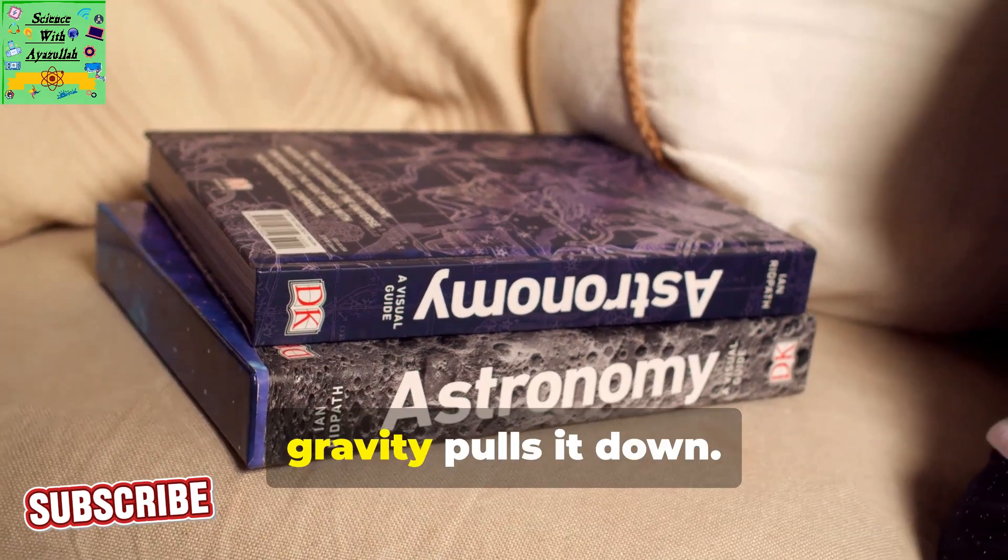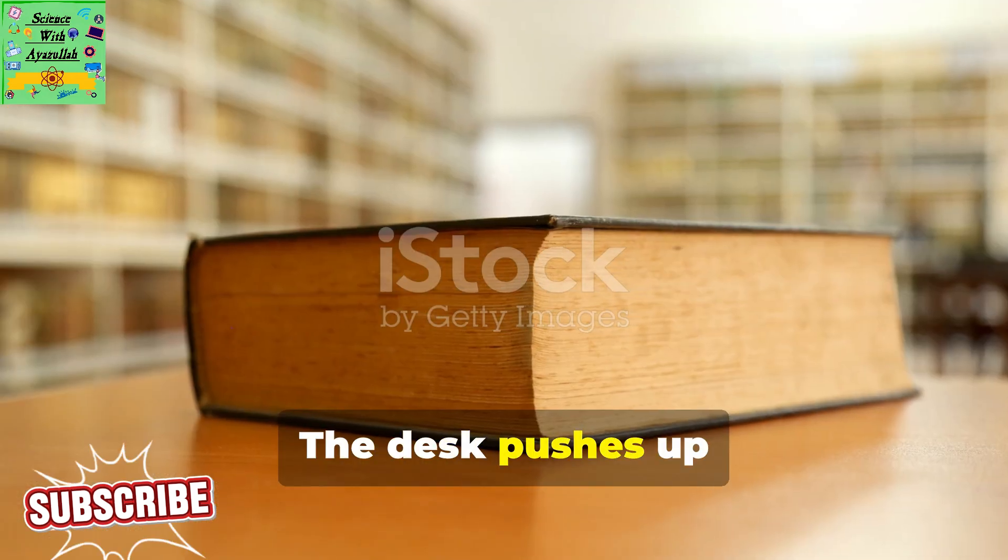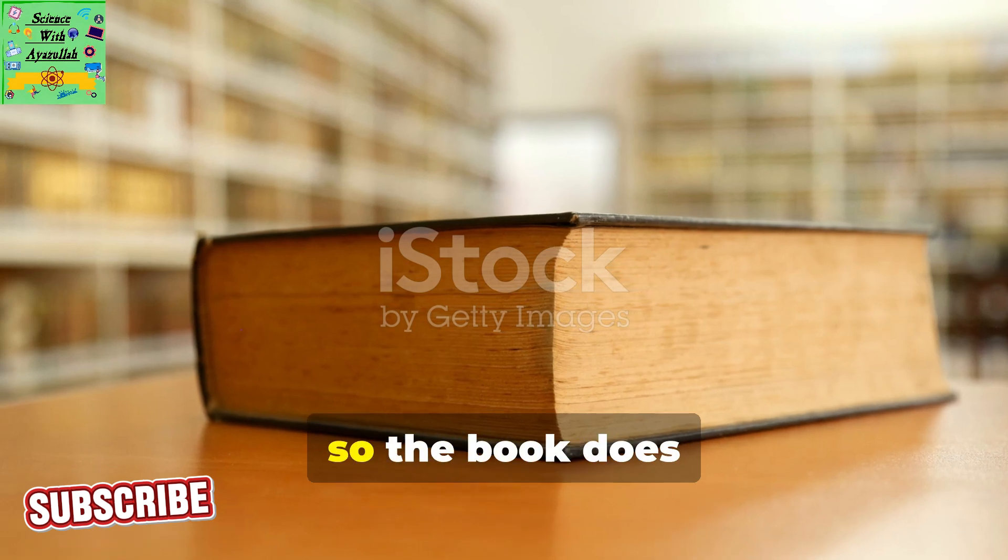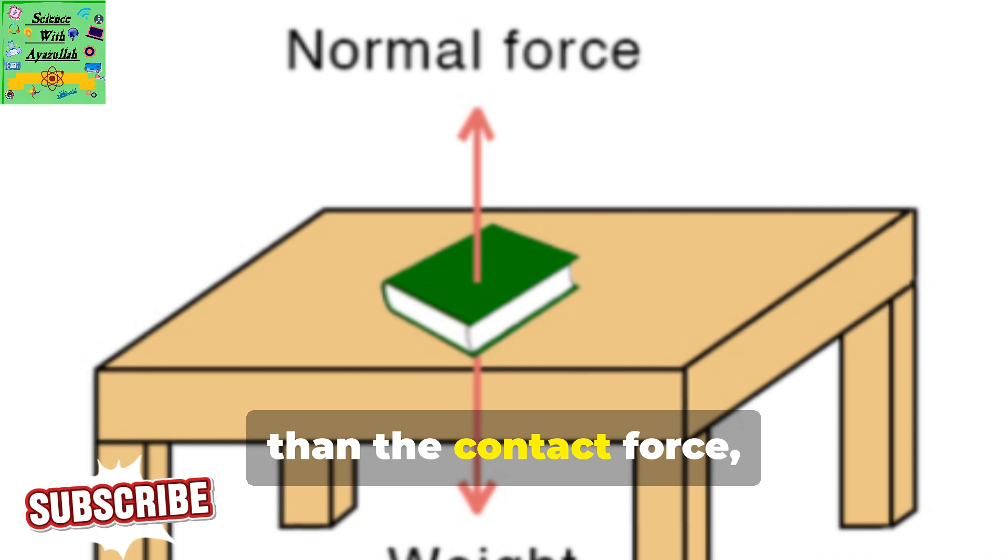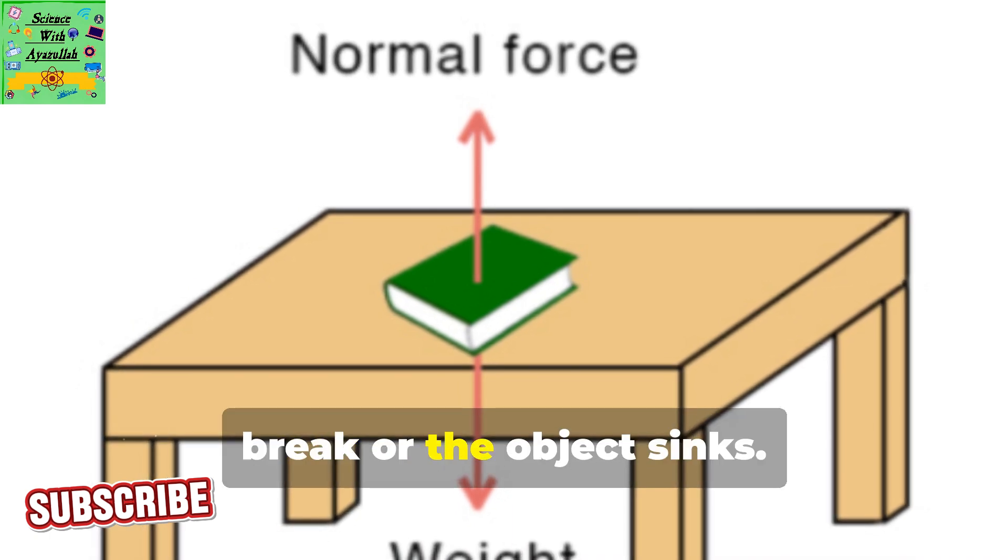When a book rests on a desk, gravity pulls it down. The desk pushes up with an equal contact force, so the book does not move through the desk. If weight is larger than the contact force, the surface can break or the object sinks.